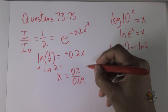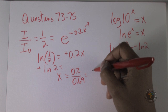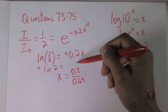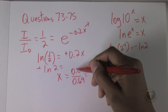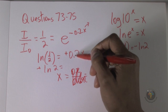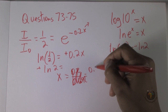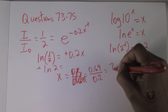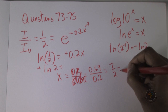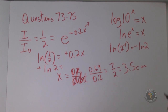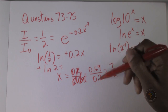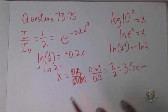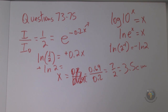So x equals 0.69 divided by 0.2. Multiplying top and bottom by 10 gives 6.9 over 2, which is approximately 7 over 2, equal to 3.5 centimeters. Converting to fractions works much better than decimals — you'll work faster during the exam if you use fractions rather than decimals in general.